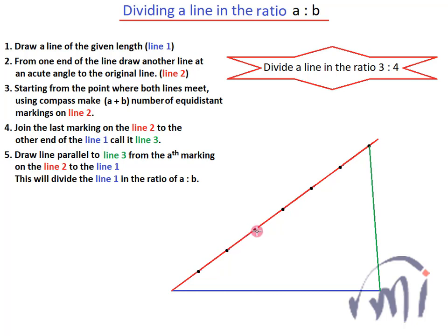From this marking I have to draw a line parallel to this green line to this blue line and wherever that intersects that will divide the blue line into the ratio of 3 is to 4. So this will be the line parallel to this green line.